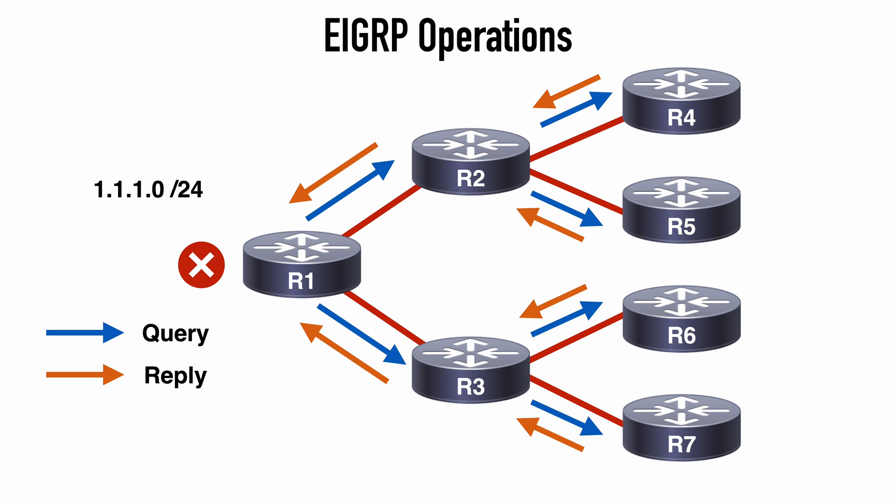The issue with stuck-in-active happens when we do not receive our replies in a timely manner. When EIGRP goes active for a route, our active timer starts, which by default is three minutes. If within three minutes we do not receive responses to all of the queries from all EIGRP neighbors, then EIGRP marks the route as being stuck-in-active and it will reset the EIGRP neighbor for which no response has been received.